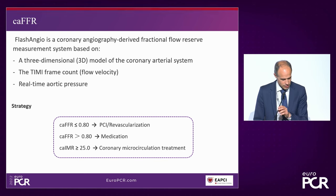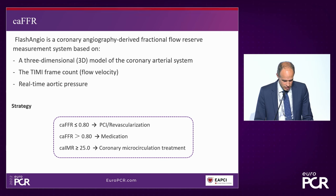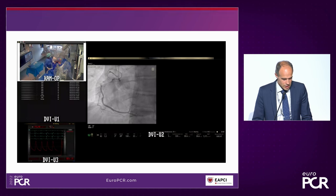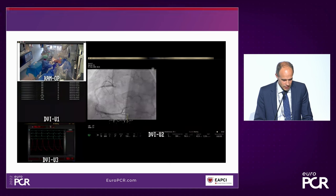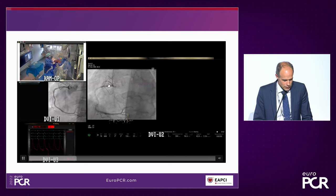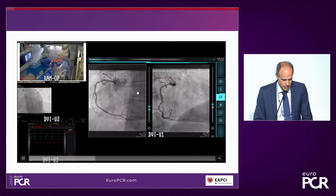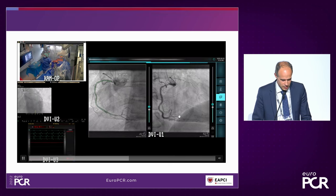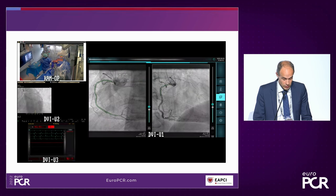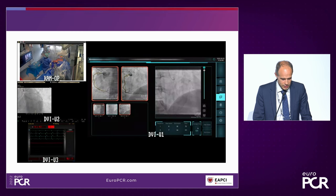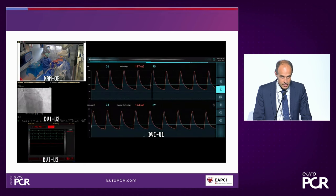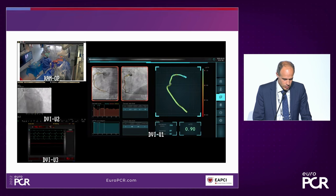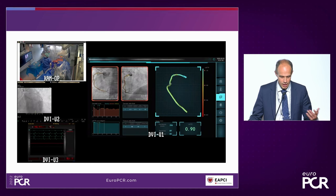Here is a live measurement actually performed in Mainz. Dr. Blessing makes the angiography of the right coronary artery. About one minute later, you have a 3D reconstruction of the vessel. Then the flow velocity is calculated based on the TIMI frame count, the blood pressure is entered, and the computer calculates the CFD-based CAFFR. In this case, it was 0.90 - of course there was no stenosis; this is just a case to demonstrate how the system works.